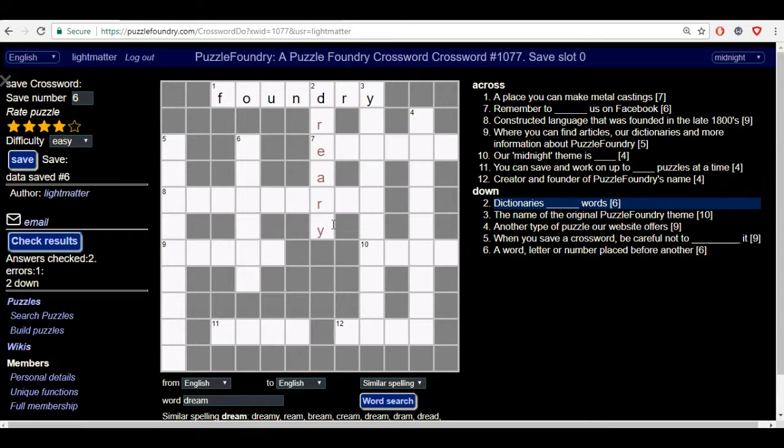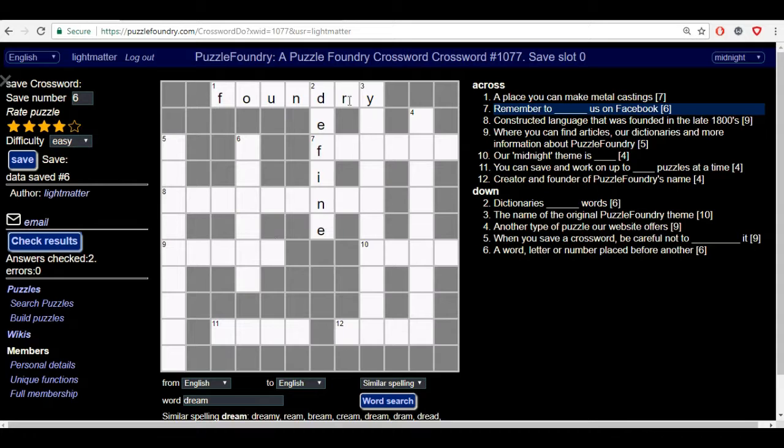And you will also see it shows you in almost like a reddish kind of pink that these letters are wrong in the puzzle. If I were to then go and fix them, so we know that dictionaries define crosswords, and check results again, you'll see that it goes back to black and then gives you answers checked and that the errors are zero. And that's basically it for solving these crosswords.